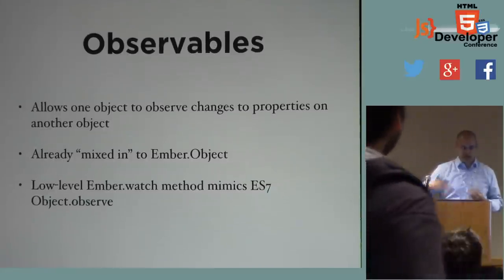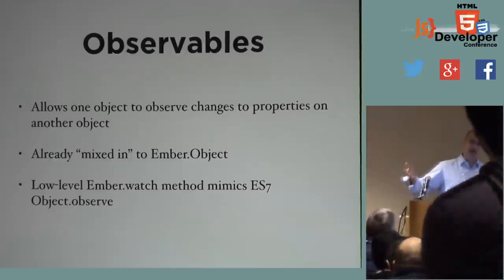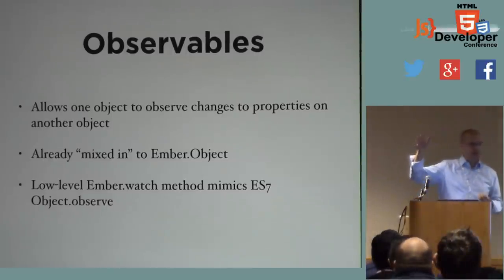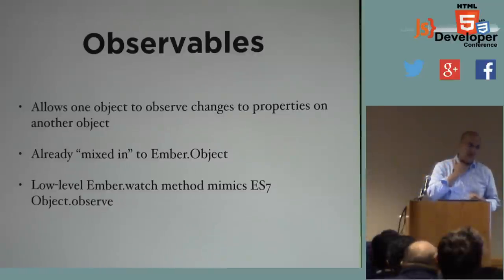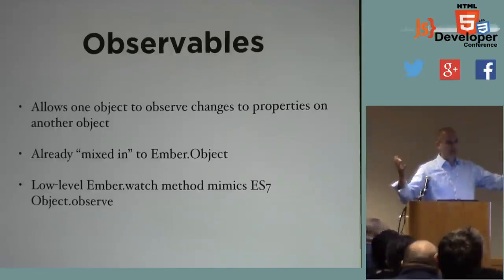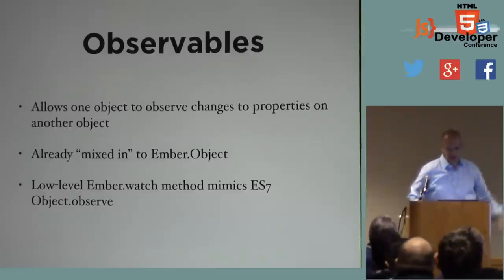If you come from a Cocoa background — iOS or Mac desktop development — this is called KVO. It's basically the same thing: I've got an object here and a function that I need to call whenever something on that object changes, so I need to observe changes on that object.